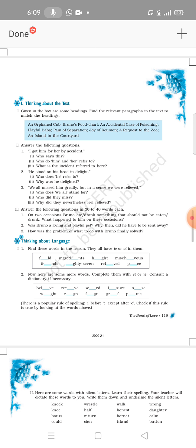Third part of thinking about the text: Answer the following questions in 30 to 40 words each. Question number one: On two occasions Bruno ate or drank something that should not be eaten or drunk. What happened to him on these occasions?